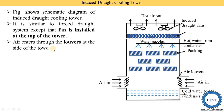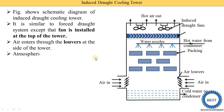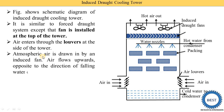Air enters the louvers at the side of the tower. Louvers means it is the space from where the air enters. So, air enters through these air louvers. Atmospheric air is drawn in by an induced fan.